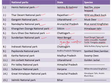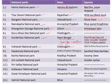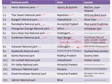Next is the Indravati National Park, situated in the state of Chhattisgarh, famous for the wild buffalo and the flying squirrel. One important thing to note is that the wild buffalo is the state animal of Chhattisgarh.